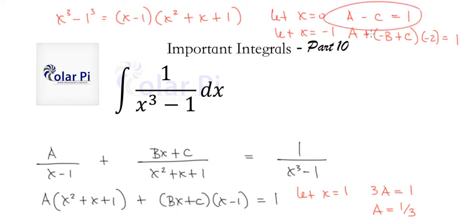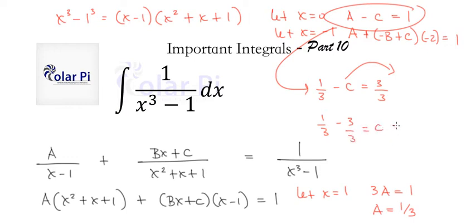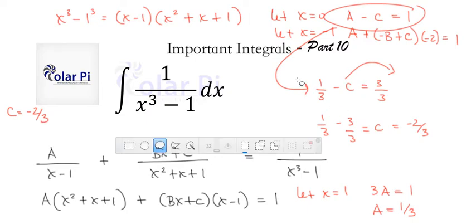Now, the first equation is going to allow us to get to C, because we already know A is a third. Specifically from that first equation here, we can write the following, which is that a third minus C is equal to 1, or 3 thirds. So taking the C over to the right side and subtracting 1 or 3 thirds from both sides of this equation, we can get 1 third minus 3 thirds is equal to C, or negative 2 thirds is equal to C. So in addition to A, we have C now. So we have C is equal to negative 2 thirds.